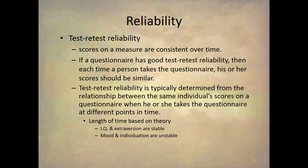Test-retest reliability is determined from the relationship of the same individual's scores on a questionnaire when taken at different points in time. How long do you wait? It depends on the theory and the trait. IQ and extroversion are very stable, so you could wait a year or two between administrations. Mood and individuation are unstable, and so you'd have to measure those — especially state mood — within minutes of each other.